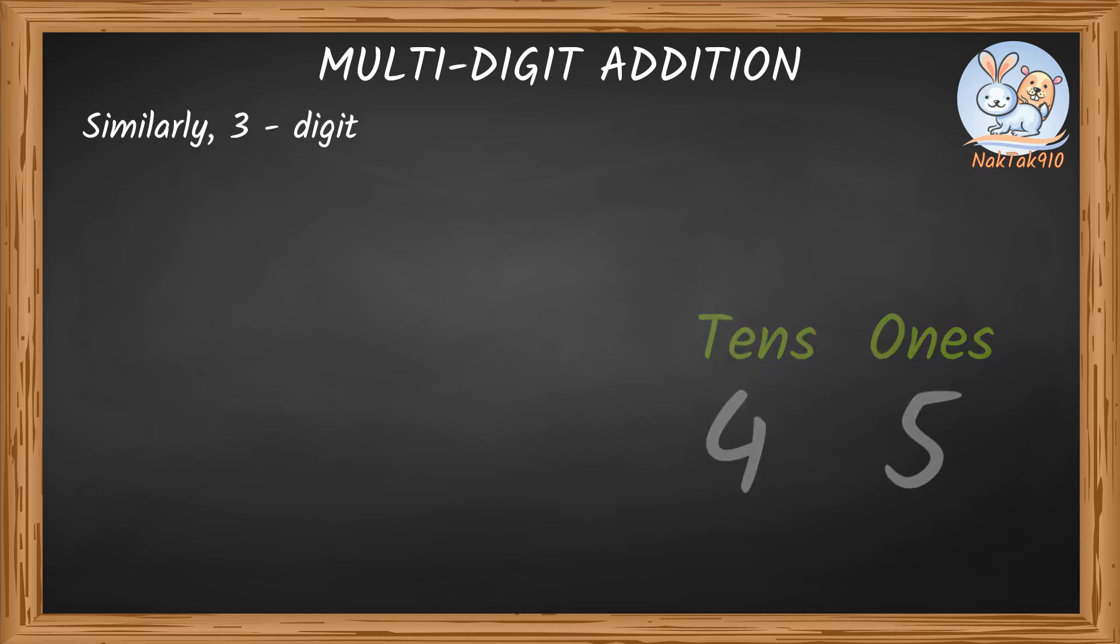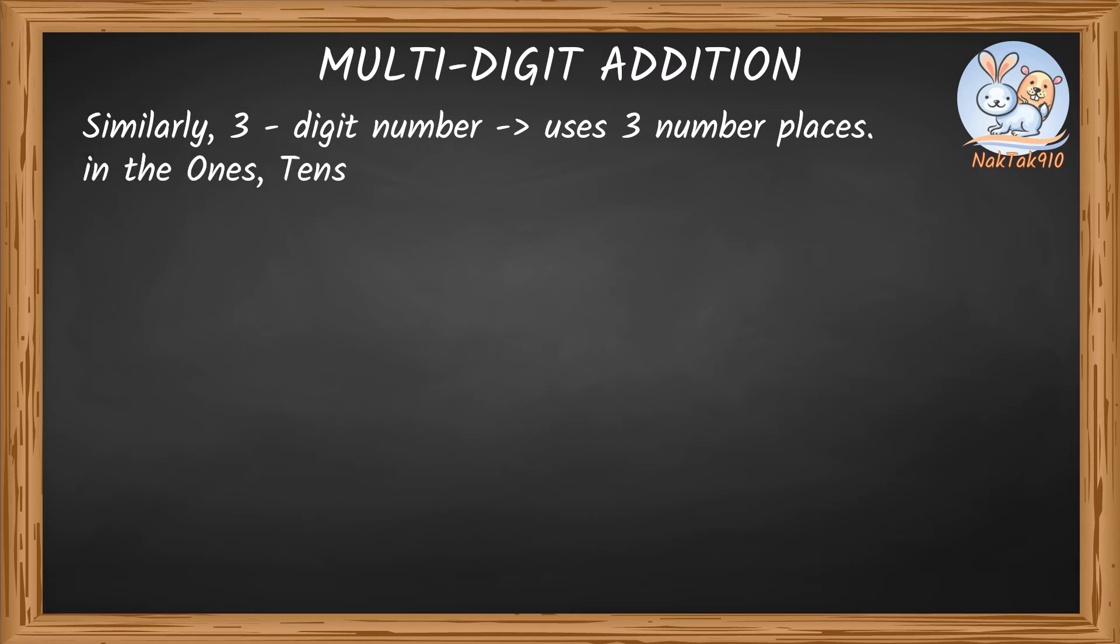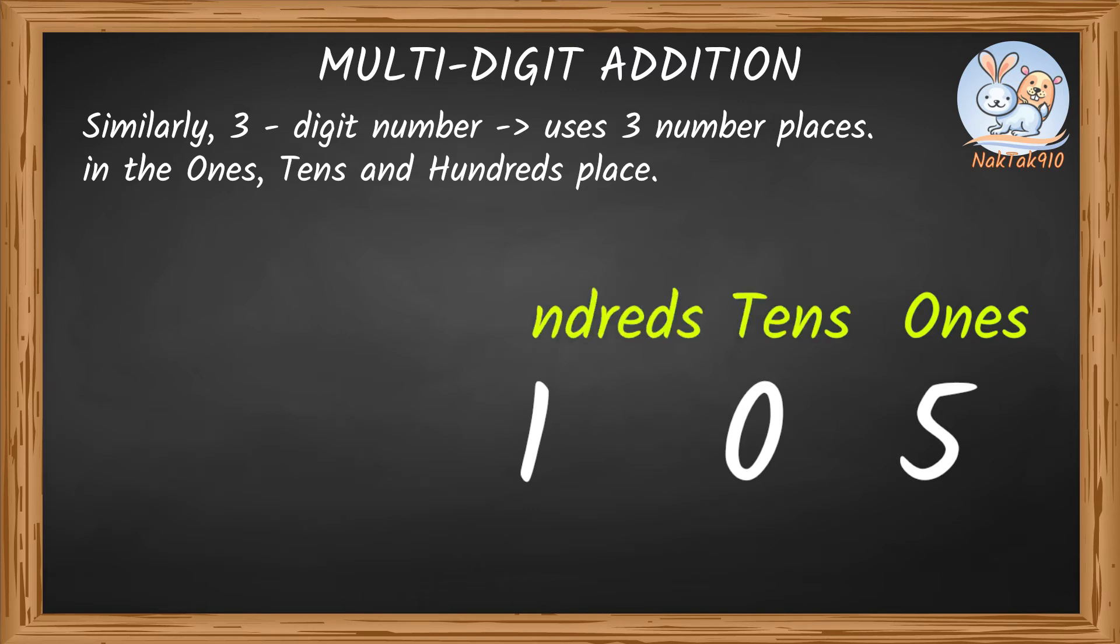Similarly, a three-digit number uses three number places with three digits in the ones place, tens place, and hundreds place. Here, 105 is a three-digit number with five in the ones place, zero in the tens place, and one in the hundreds place.